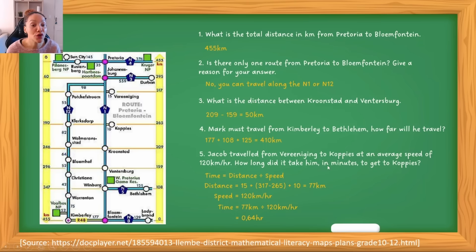But the question wants to know what is this in minutes? Now we know that to convert hours to minutes, we multiply it by 60. So I multiplied by 60, and essentially it took Jacob 38 minutes to travel from Vereeniging to Koppies. That's how you would answer questions and interpret strip maps.